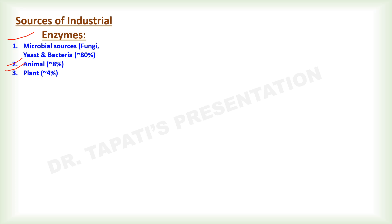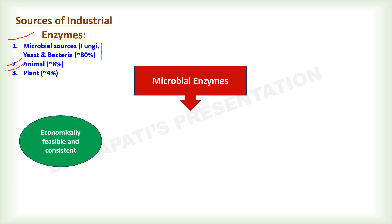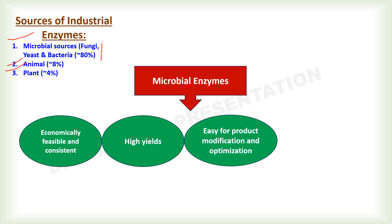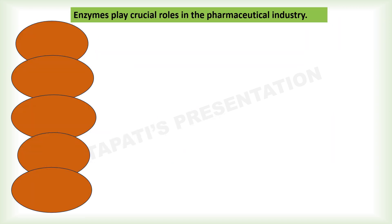Biologically active enzymes may be extracted from any living organisms including microorganisms, animals, and plants. Over half of industrially useful enzymes are obtained from fungi and yeast, and over a third are from bacteria, with the remainder divided between animal and plant sources. Microorganisms are therefore the primary sources of industrial enzymes. Medically important enzymes produced by microorganisms have the advantages of being economically feasible and consistent, with high yields and ease of product modification and optimization.